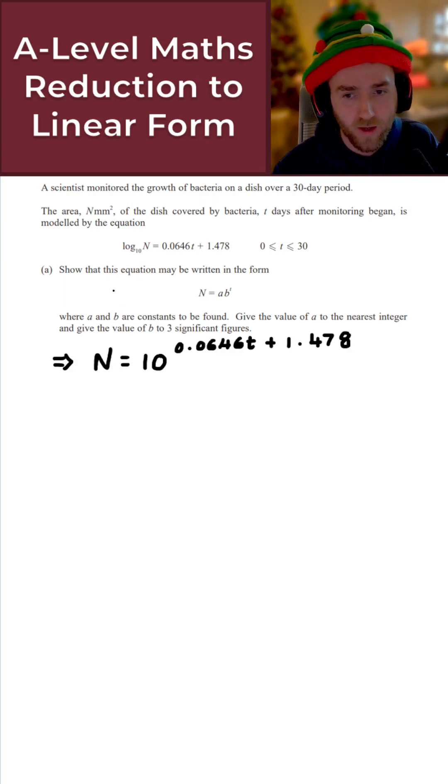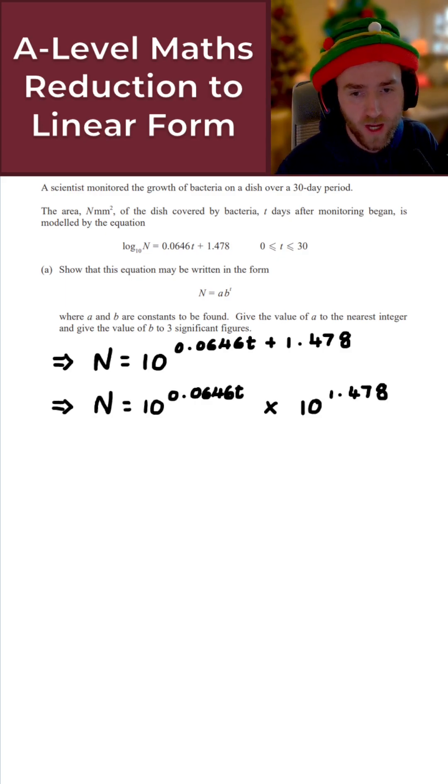And like we said, on the left-hand side here, I just simply get N because they just cancel out. And then on the right-hand side here, I get 10 to the power of all of this here. Perfect. That's exactly what we want here.